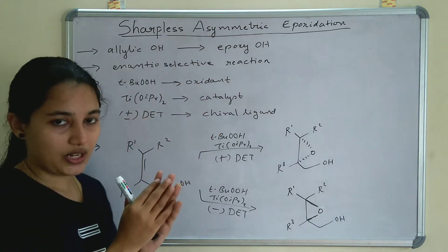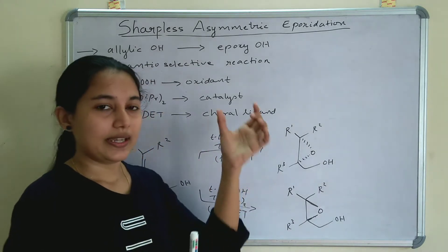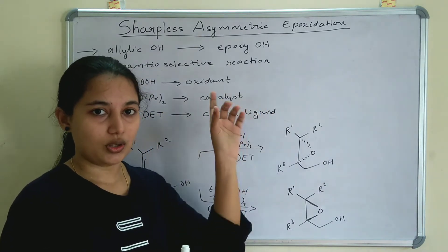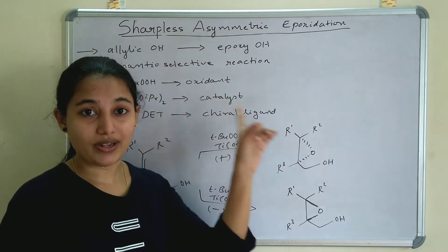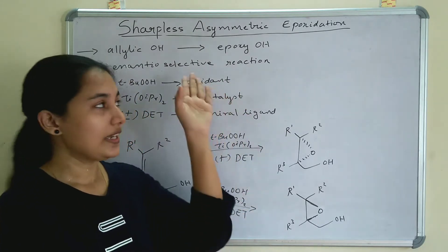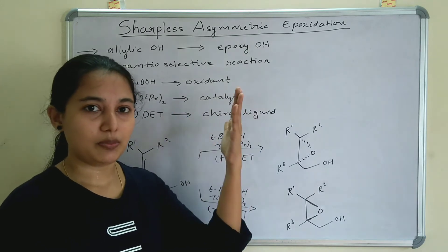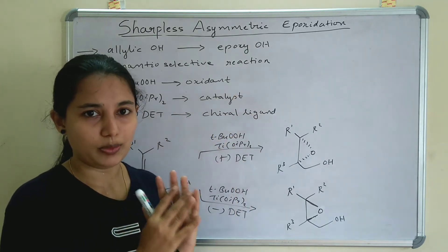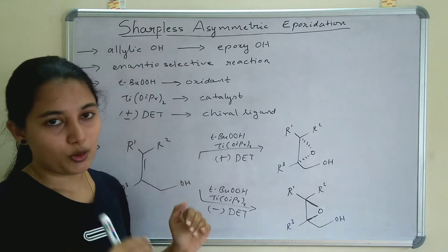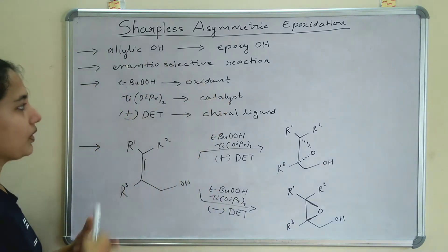Sharpless asymmetric epoxidation is an enantioselective reaction. Enantioselective reaction means when enantiomers are formed, there will be a major product — only one major product, only one isomer is possible. The epoxide may be above the plane or below the plane, but only one stereochemistry product is possible in asymmetric epoxidation.